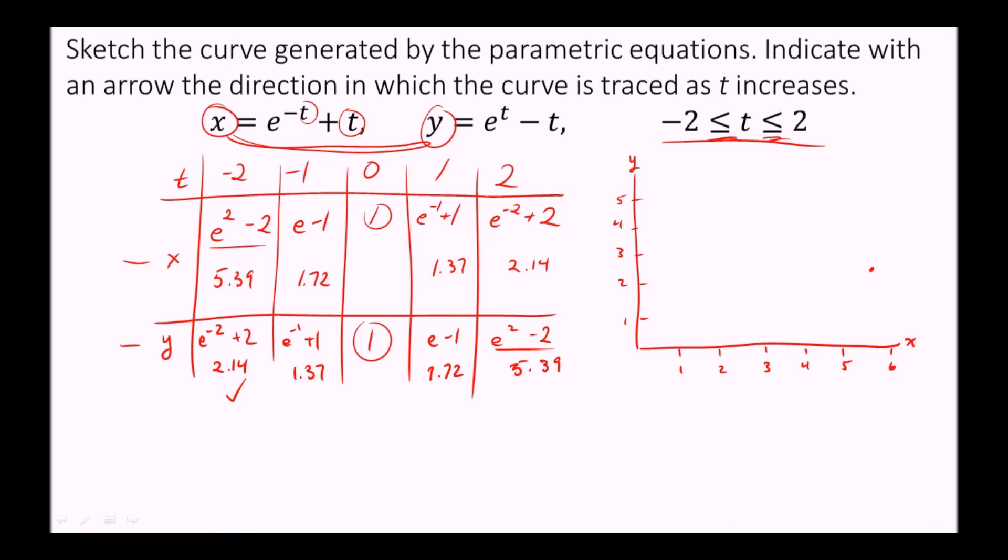When t is negative one, we have x is 1.72, and y is 1.37. Then we have 1, 1, the easiest. When t equals one, we have our x value being 1.37, and our y value being 1.72.